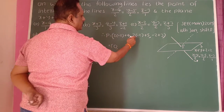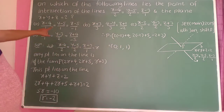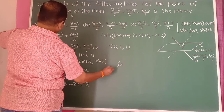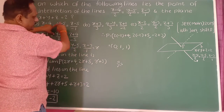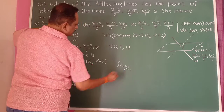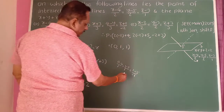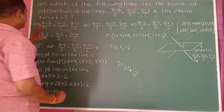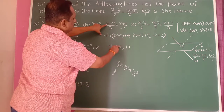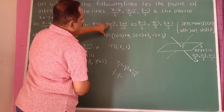x = minus 4 plus 4 = 0. y = 2 into minus 2 plus 5 = minus 4 plus 5 = 1. z = minus 2 plus 3 = 1. So the point P is (0, 1, 1). Now check the answer options by substituting this point into the line equations given.